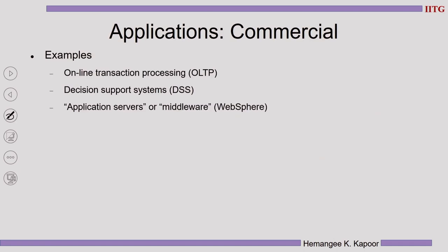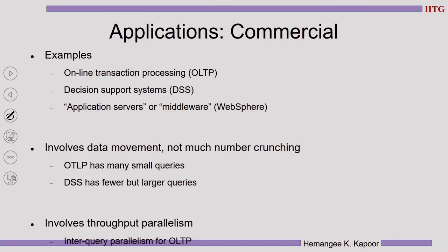In the commercial aspect, we now have lots of online transactions, decision support systems, and so on, all running on data center servers or cloud servers. Online transaction processing and decision support systems need high-end servers. They involve lots of data movement — not as much number crunching, but more data movement. OLTP has small but numerous queries, while decision support systems have larger but fewer queries. Each has a different demand, and the system must have facilities to cover both. Overall, these applications require throughput parallelism — the throughput at which results are sent out should be as fast as possible.